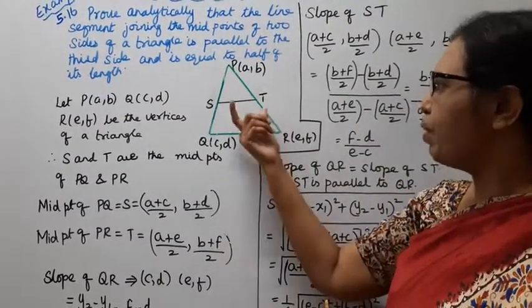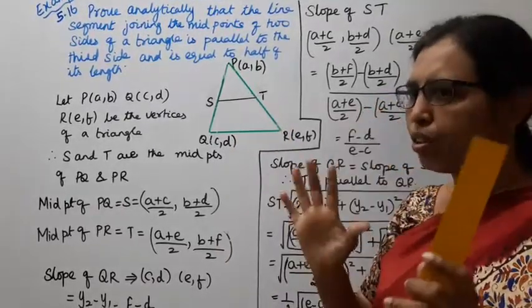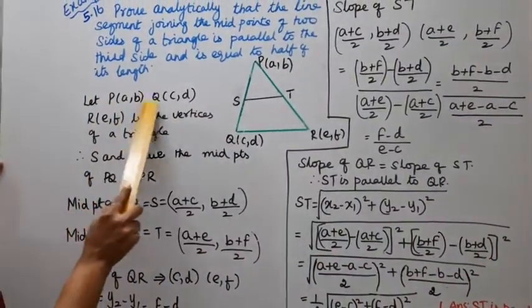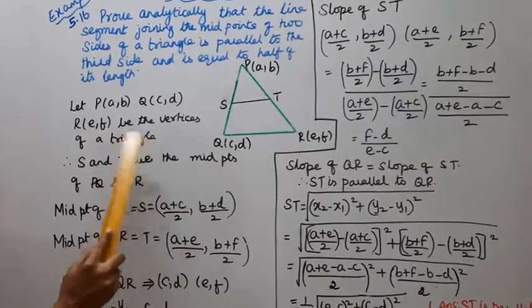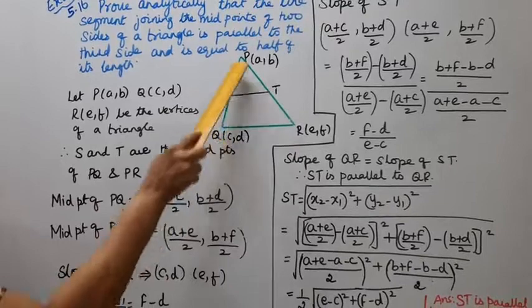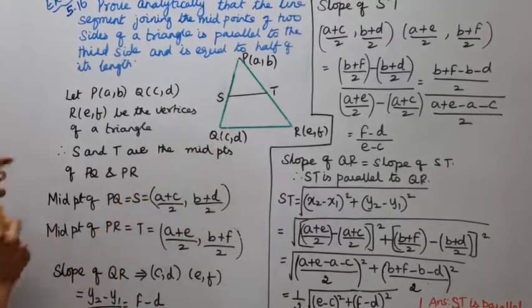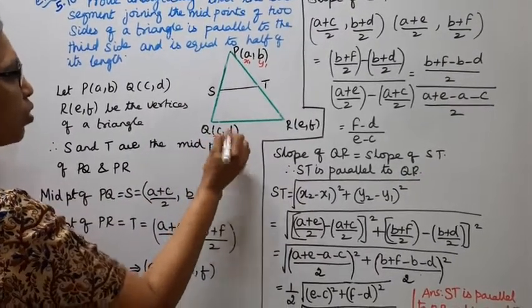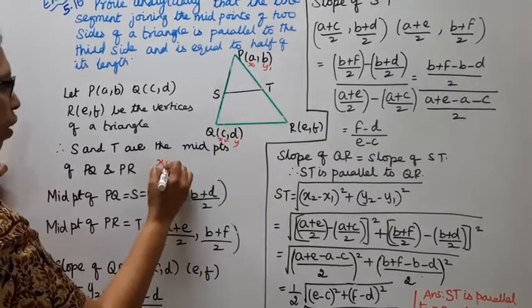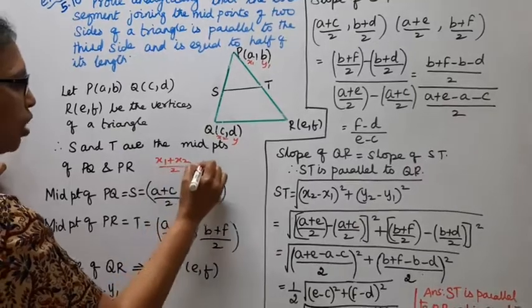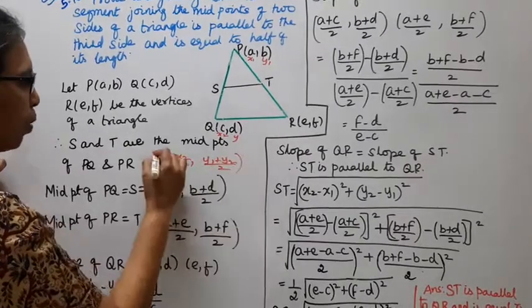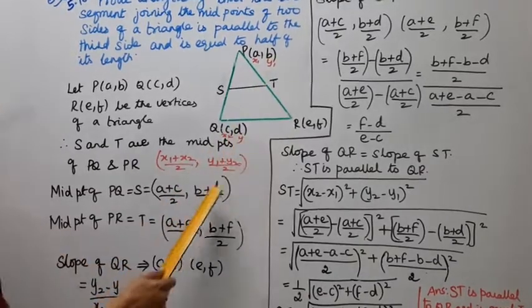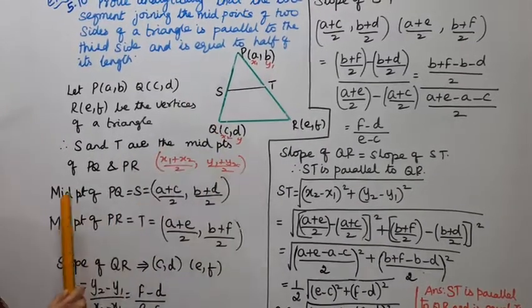Now, the midpoint of PQ is S. Using the midpoint formula — x1 plus x2 divided by 2, y1 plus y2 divided by 2 — with P as (x1, y1) and Q as (x2, y2), the midpoint S of PQ is: A plus C divided by 2, B plus D divided by 2.